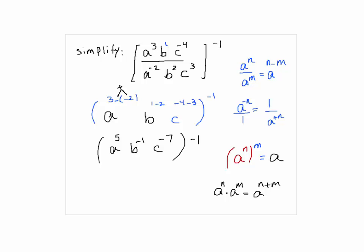So here would be multiply, right? So you multiply them, n times m. So over here, I would get A to the power of 5 times negative 1, which is negative 5, B to the power of positive 1, C to the power of positive 7.